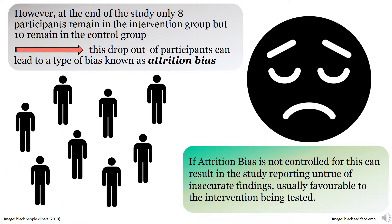This unequal loss of participants can lead to attrition bias, and if not controlled for, can lead to inaccurate research findings, usually in the favour of the intervention being tested. Without the data from the two missing participants, it is difficult for researchers to accurately measure if an intervention is more effective than a control.